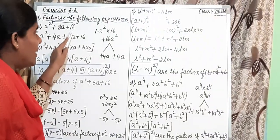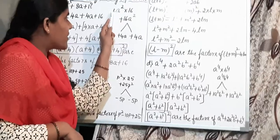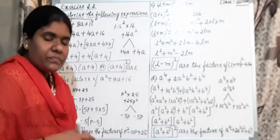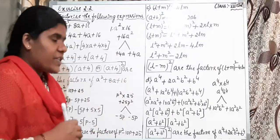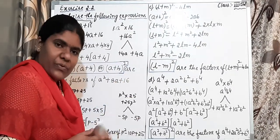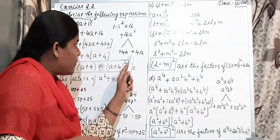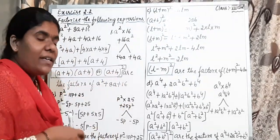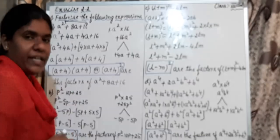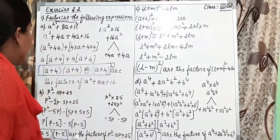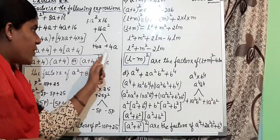I will repeat once again. Step 1: multiply first term into last term — that is a² into 16, giving 16a². Next, Step 2: choose suitable multiplicative factors. Here 16 is present in the 4-times table. Observe the middle term: it is 8a. I take 4a plus 4a — because multiplying them gives plus into plus is plus, 4 fours are 16, and a into a is a². Adding these two numbers gives the middle term 8a. Therefore the two multiplicative factors are +4a and +4a. Instead of 8a, rewrite as 4a plus 4a: giving a² plus 4a plus 4a plus 16.